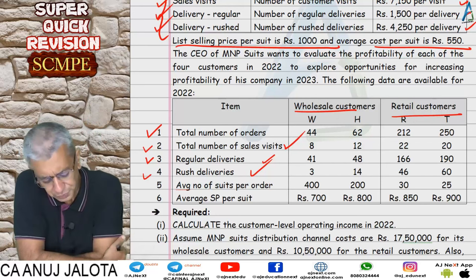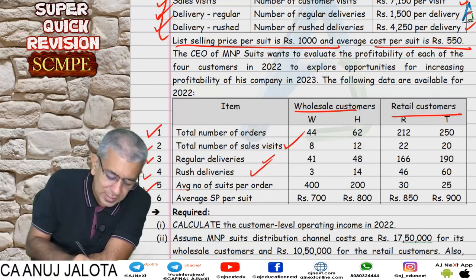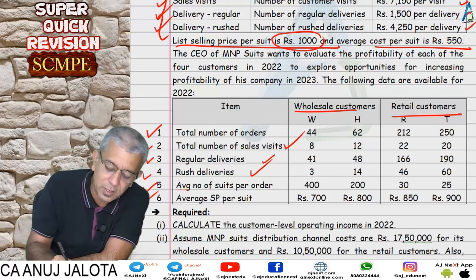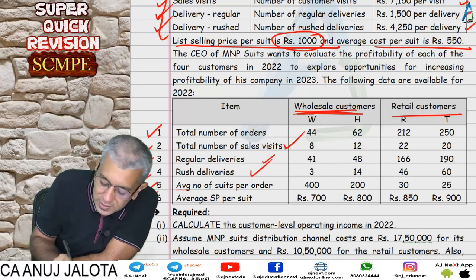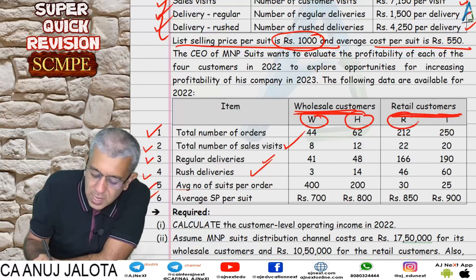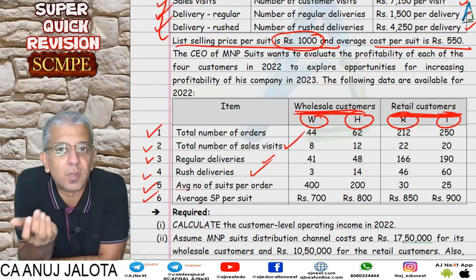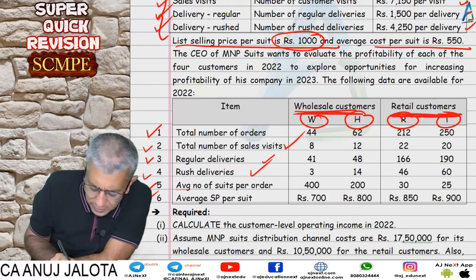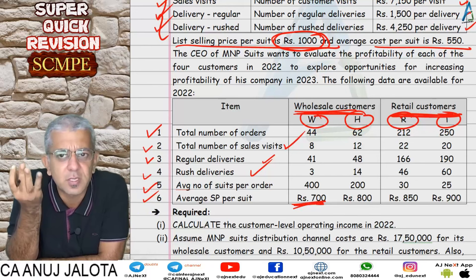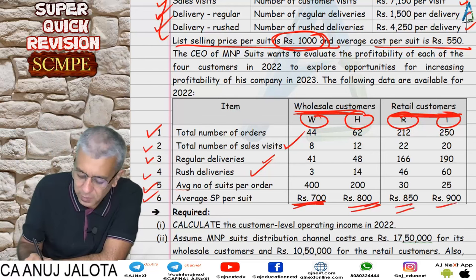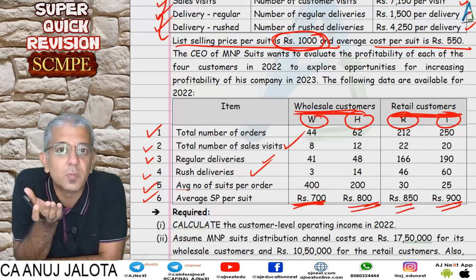Rush delivery cost is usually higher. The data gives average number of suits per order and average selling price per suit. The MRP was the list selling price, but since we sell to wholesalers and retailers — two wholesale and two retail customers — we sell at a discount. Compared to an MRP of 1000, we sell at 700 giving a 30% discount, with varying discounts for other customer types.